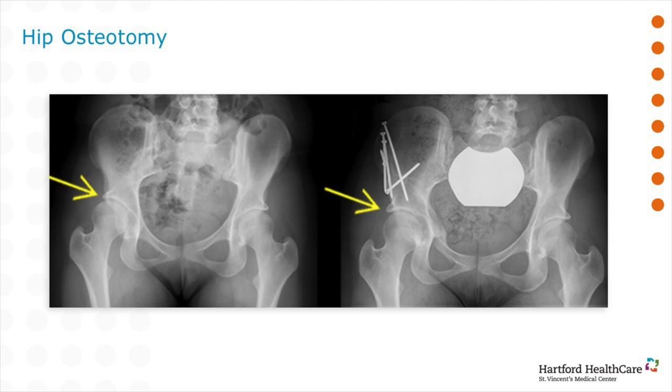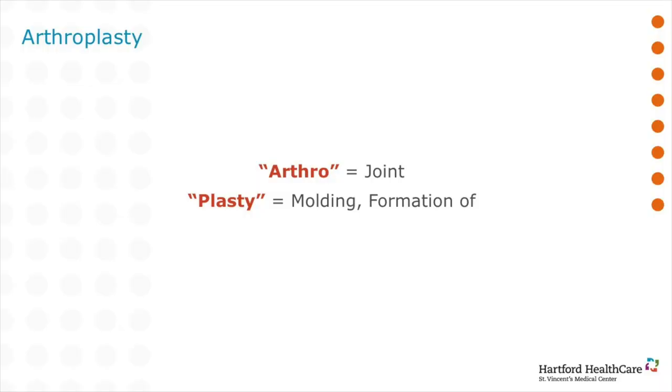Here you can see under-coverage of the ball and socket joint, which is corrected by breaking and reorienting the pelvis. Again, this is a very invasive procedure that requires prolonged protected weight bearing after surgery and is generally reserved for younger, more active patients with hip dysplasia.